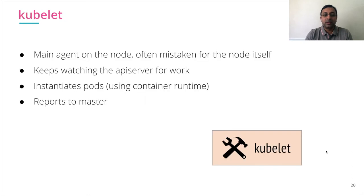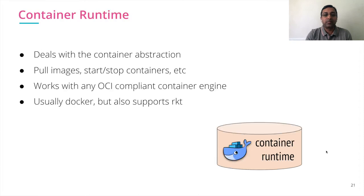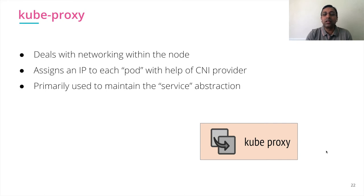On the worker node side: kubelet is the main agent on the node, keeps watching for new requests from the API server, instantiates pods, and reports back to the master the current state of pods running on the worker node. Container runtime — primarily Docker — handles images, starting, and stopping containers using an OCI-compliant container engine. Kubeproxy deals with networking within the node, assigns IPs to each pod with the help of a container network interface provider, resolves service abstractions, and updates all IP table rules.